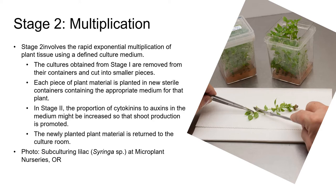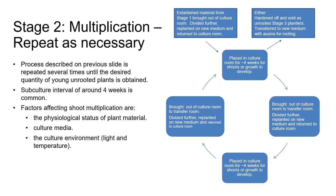When the plant material has produced sufficient shoots — again perhaps in around four weeks — it's removed from the culture room and the process is repeated for however many times are needed to reach the desired quantity of young unrooted plants. Factors affecting the rate of shoot multiplication are the physiological status of the plant material, the ingredients in the culture medium, and light and temperature in the culture environment.